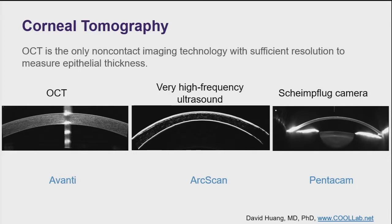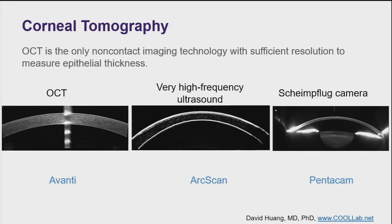This is where corneal tomography comes in to provide additional diagnostic information. Scheimpflug cameras don't have sufficient resolution to measure epithelial thickness. So with current OCT technology, you can image the cornea with high resolution, and with automated segmentation, the system can map the pachymetry and epithelial thickness.